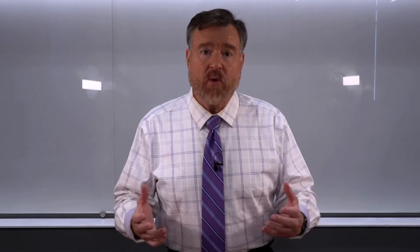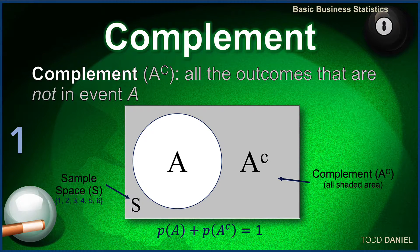Let's look more at these relationships between events, starting with just one event. The complement of an event, written as A superscript C, includes all of the outcomes that are not in event A.